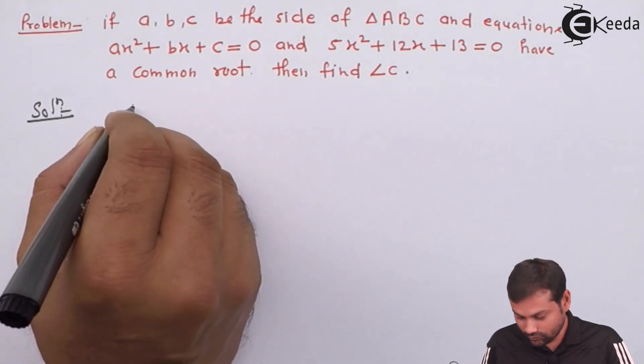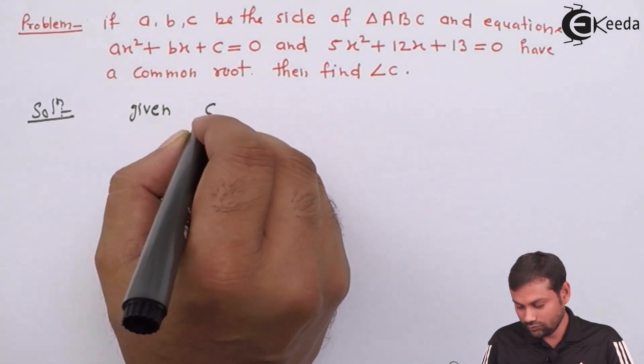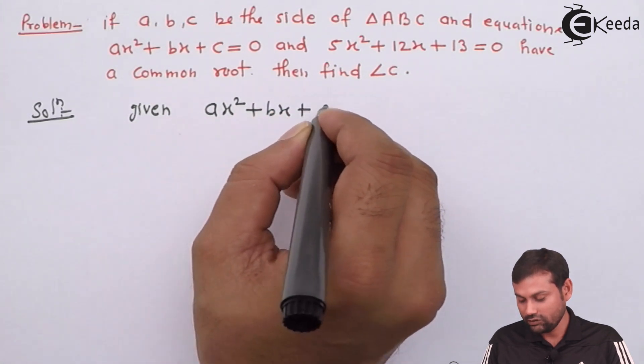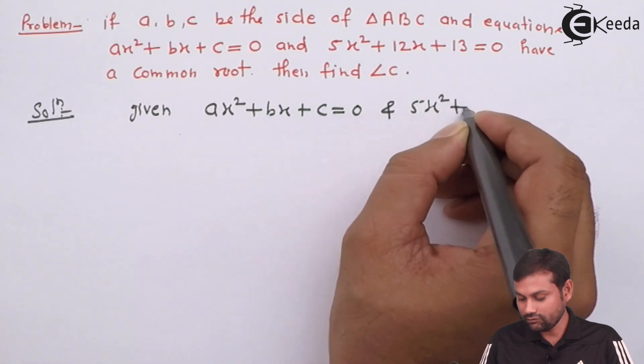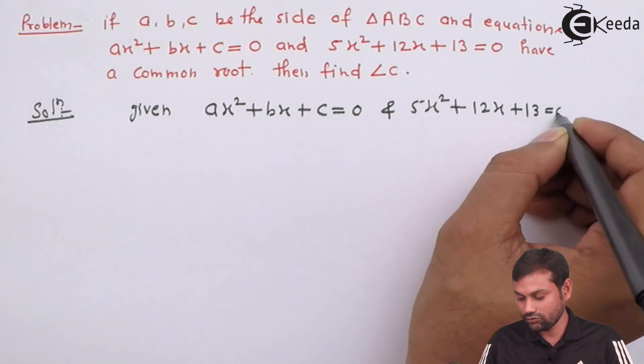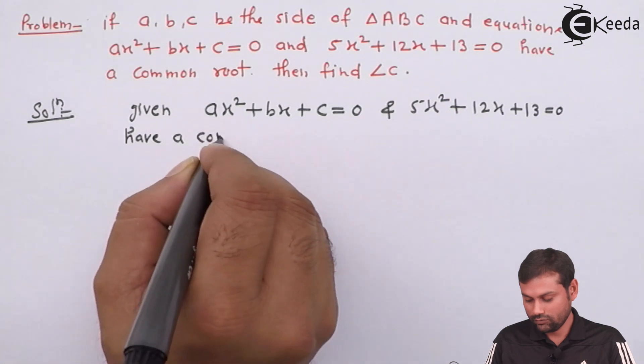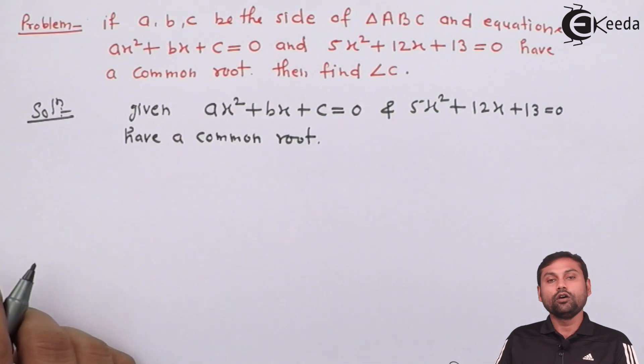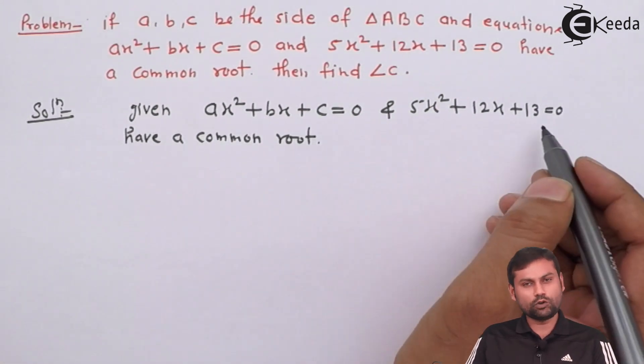So, given AX square plus BX plus C equals to 0 and 5X square plus 12X plus 13 equals to 0 have a common root. Let's check the discriminant of this quadratic equation.